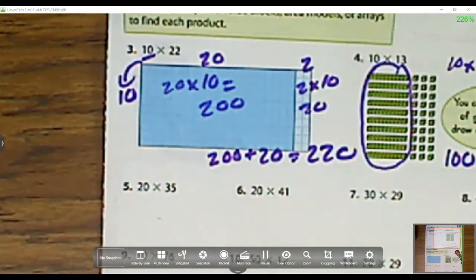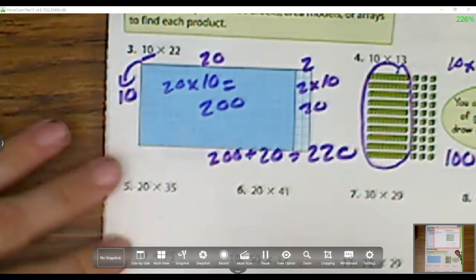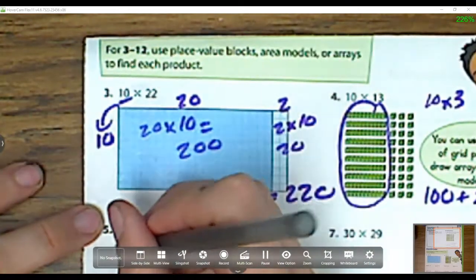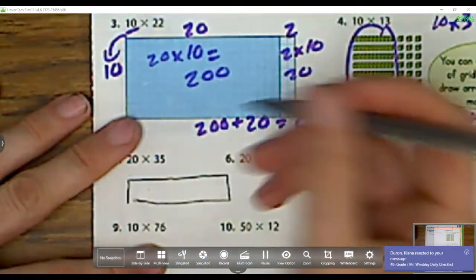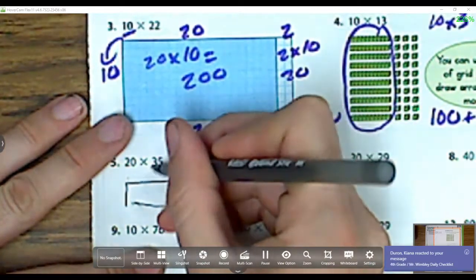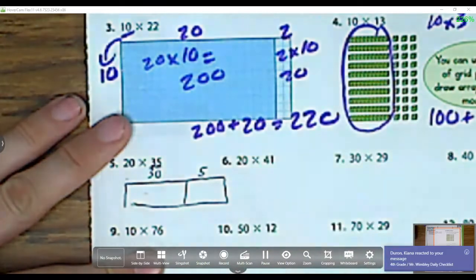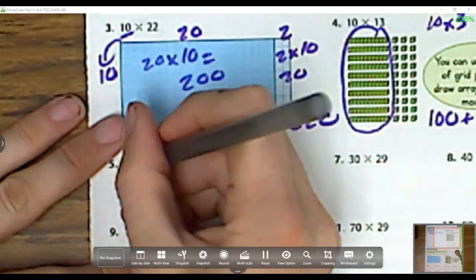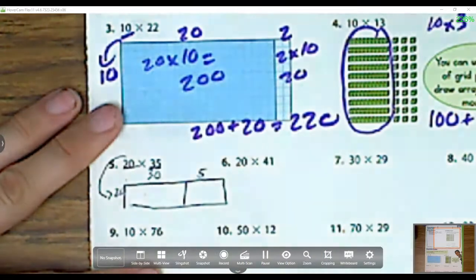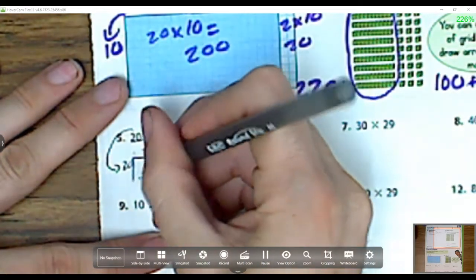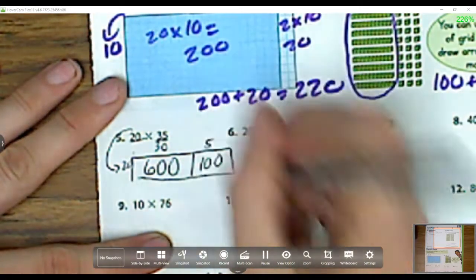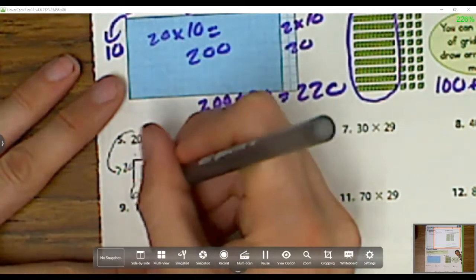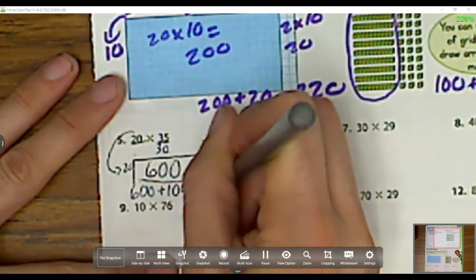Now let's head to this part down here. It says use place value blocks, area models, or arrays to find the product. So I'm going to draw this picture right here. It's going to be a little smaller, so I'm sorry about that, guys. I'm breaking it up into 30 and I'm breaking it up into 5. And now on the side, that's this number right here, I'm multiplying it by 20. 20 times 30 is 600, and then 5 times 20 is 100. So now I add those together, 600 plus 100 equals 700.